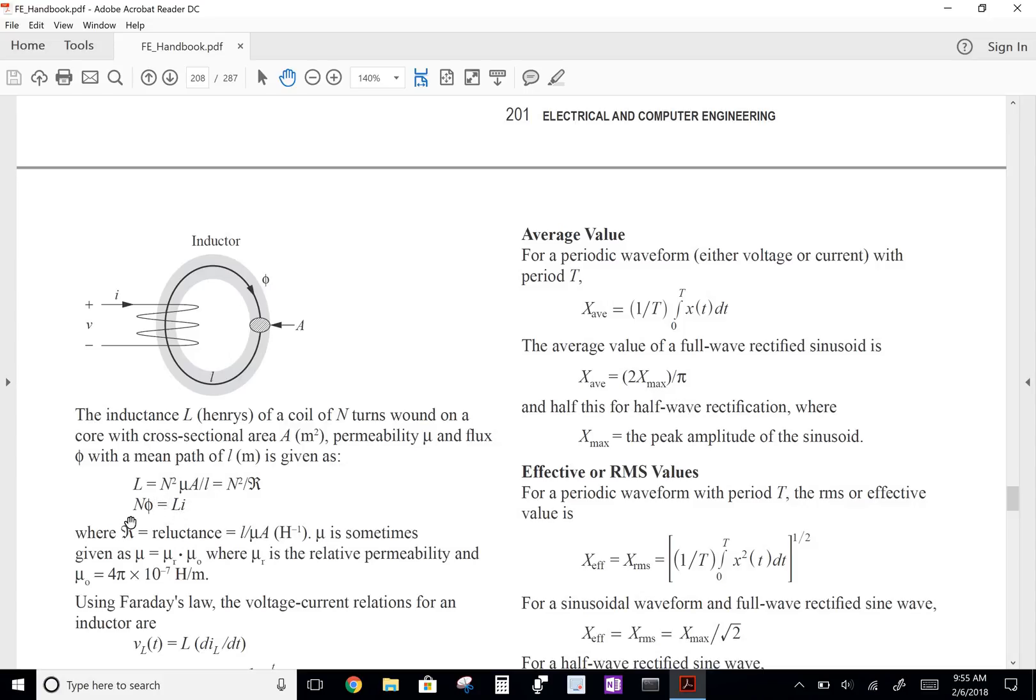We're also given this expression: the number of turns times the flux equals the inductance times the current. And that I is what we're looking to solve for. We're given L here, so we can plug in L into the bottom expression and solve for I.